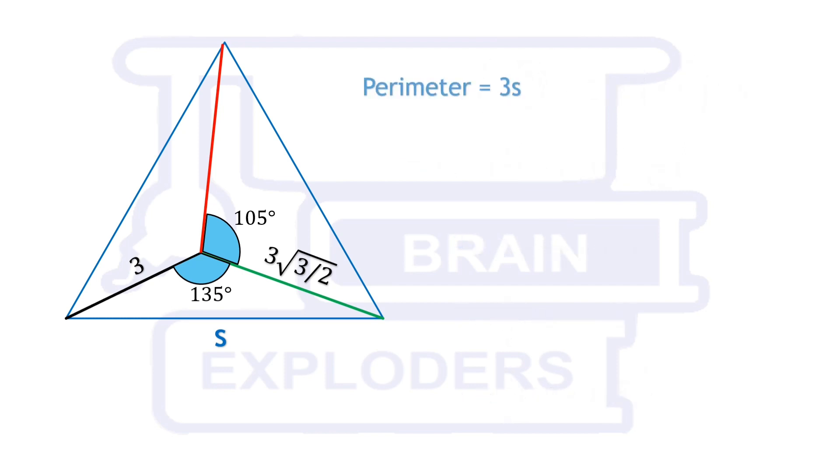So, the required perimeter 3s is approximately equal to 18.515 cm.